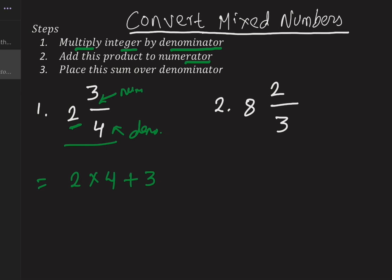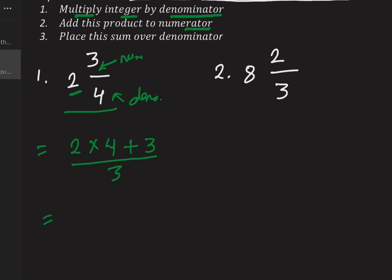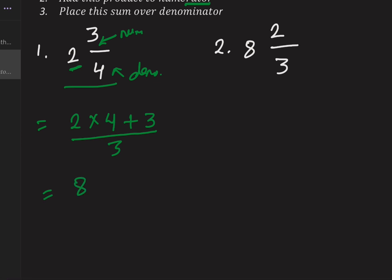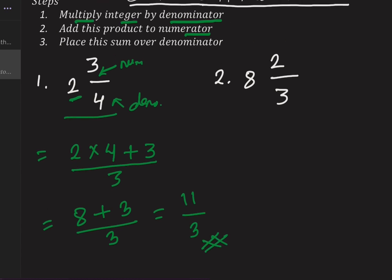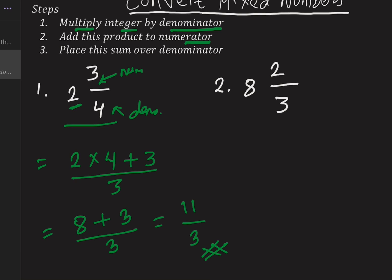This result divided by denominator that is 3. Just solving this: 2 times 4 is 8 plus 3 divided by 3 equals 8 plus 3 is 11 divided by 3. This is the result for this fraction.